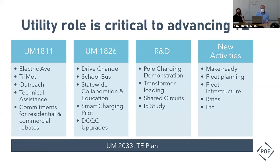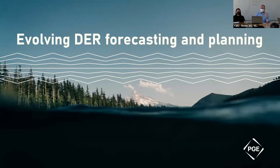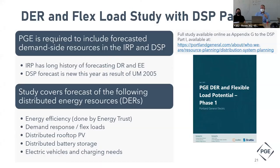On transportation electrification, in Oregon we're seeing a lot of activity around how the utility can accelerate the transportation transformation. On the R&D side, we're exploring things like pole charging — that's to make it more equitable for people who don't have single family residences and park on the street. It's actually cheaper to put the charger directly on the utility pole. We've worked with the City of Portland to do that, including changing city code and ordinances, and now we're trying to figure out how to deploy this at scale.